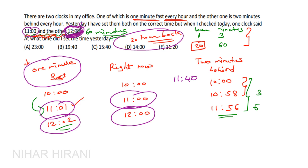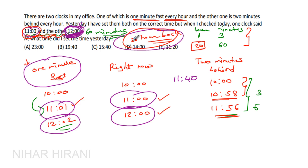We can verify with the slow clock: it is the 2-minutes-behind clock, so every hour it goes 2 minutes behind. In 20 hours it will be 40 minutes behind. This clock shows 11, so the actual time is 11 plus 40 minutes, which is again 11:40. So we know the actual time right now is 11:40, with the clocks showing wrong times of 11 and 12.